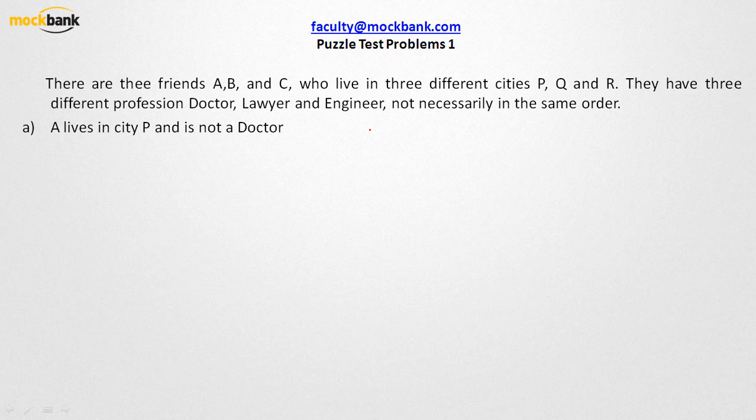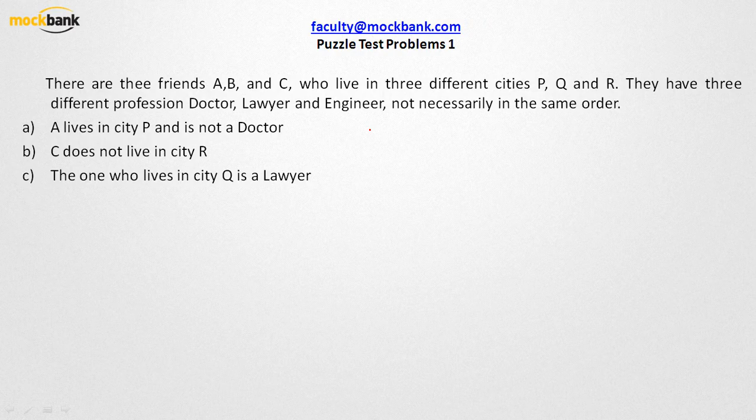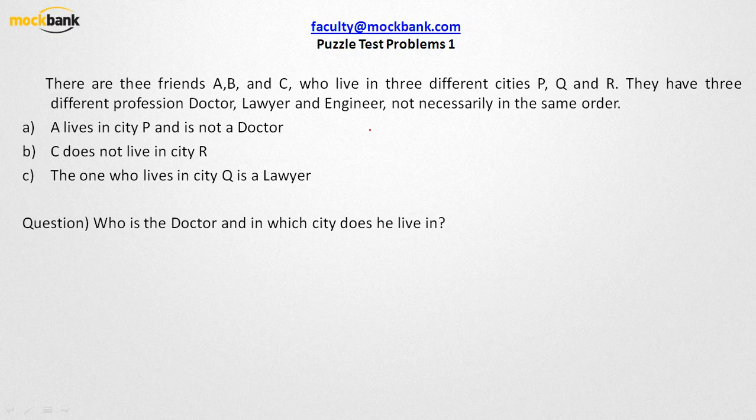The information given to us is: A lives in city P and he is not a doctor. Another statement is C does not live in city R. The third piece of information is the one who lives in city Q is a lawyer. The question being asked is: who is the doctor and in which city does he live?